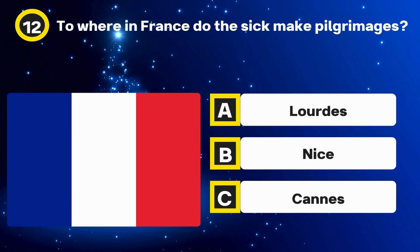Question 22. What links Goa, Kerala, Assam, Bihar? Options: Rivers, States, Mountains. The answer: States.